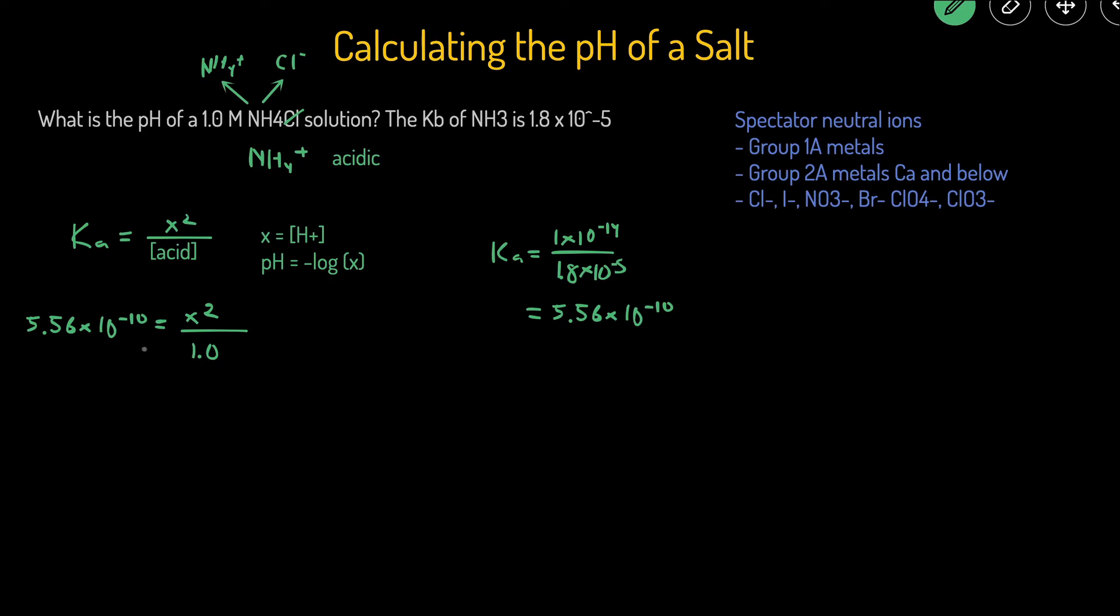Then we can just multiply both sides by 1 and take the square root of that, and we'll get our x value. x equals 2.36 times 10 to the negative 5.